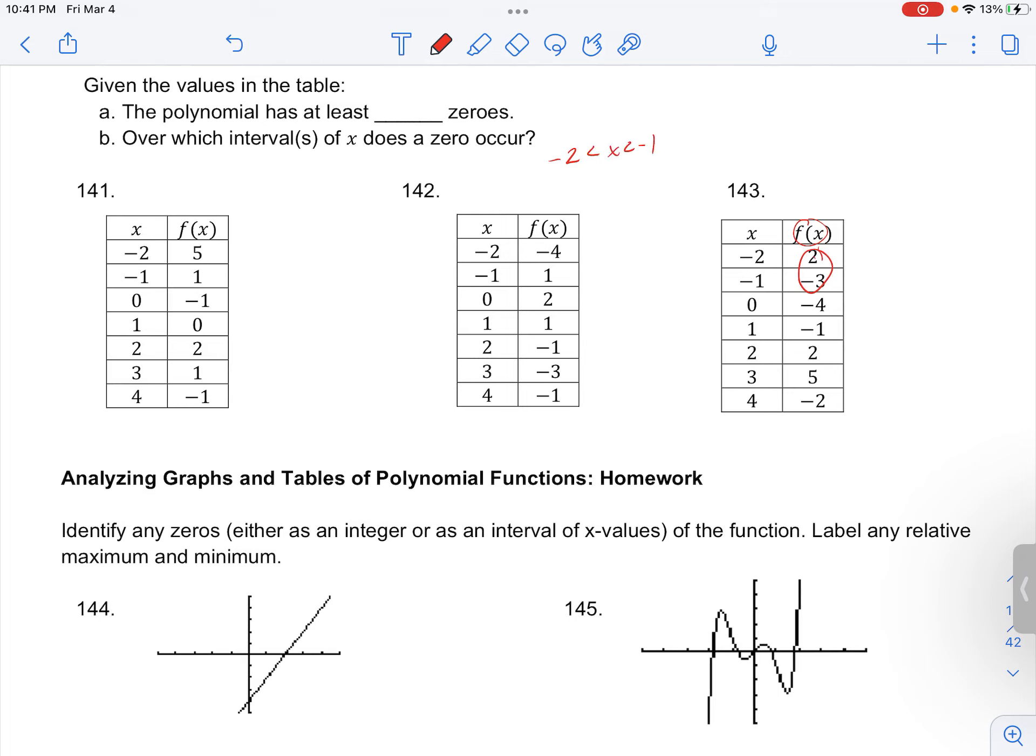That changes from a positive to a negative, meaning that I had to cross the x-axis from some positive y value, so that would be 2, to a y value of negative 3. So I must have crossed and made a zero there.